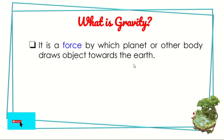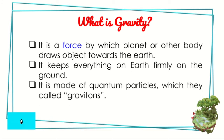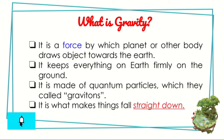Let's discuss about gravity. What is gravity? It is a force by which a planet or other body draws objects towards the earth. It keeps everything on earth firmly on the ground. It is made of quantum particles called gravitons, and it is what makes things fall straight down. When we talk about gravity, it is a force that pulls objects towards the center of the earth.